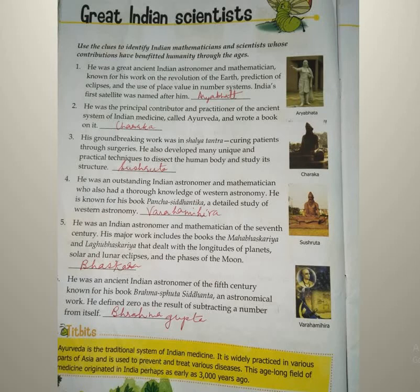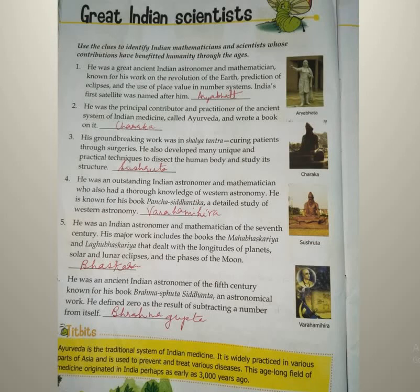Ayurveda is the traditional system of Indian medicine. When medicines were not developed, traditionally we used only herbs to cure diseases. You might have heard in the Ramayana that when Lakshman was injured during the war, Hanuman went and brought a whole mountain full of herbs, and with the help of those herbs Lakshman was cured. Ayurveda is widely practiced in various parts of Asia and is used to prevent and treat various diseases. This field of medicine originated in India and is about 3000 years old.